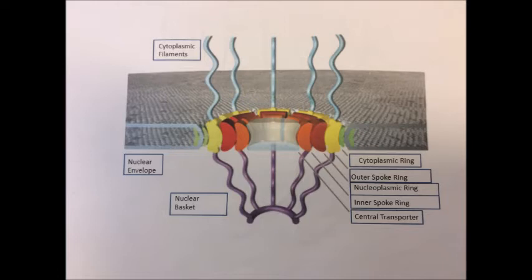The final label we have is the nuclear basket. The nuclear basket has many important roles in a number of processes including the export of mRNA from the nucleus.